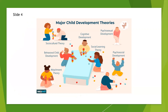Child development theories focus on explaining how children change and grow over the course of childhood. These developmental theories center on various aspects of growth, including social, emotional, and cognitive development. The study of human development is a rich and varied subject. We all have personal experiences with development, but it is sometimes difficult to understand how and why people grow, learn, and act as they do. Why do children behave in certain ways? Is their behavior related to their age, family relationships, or individual temperament?